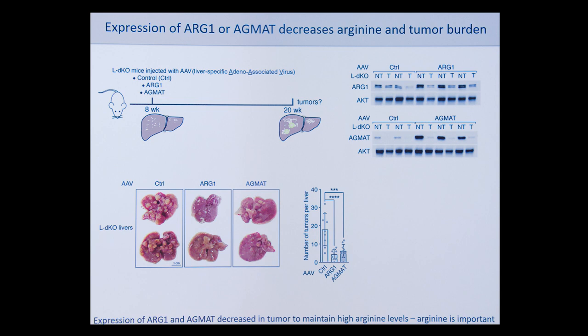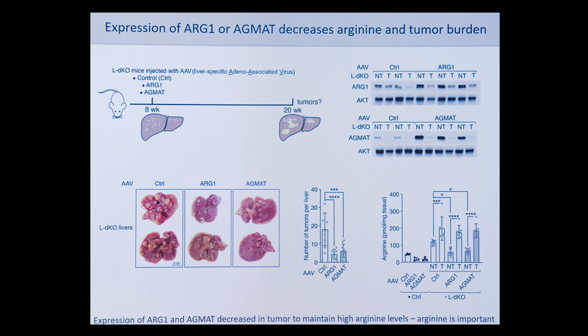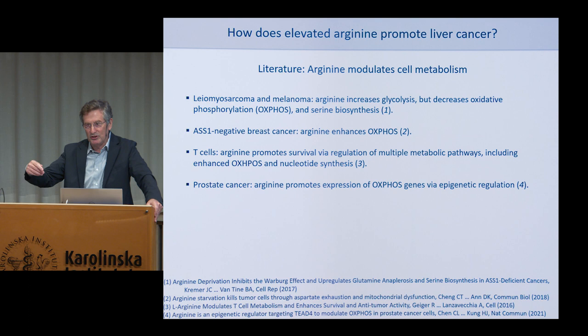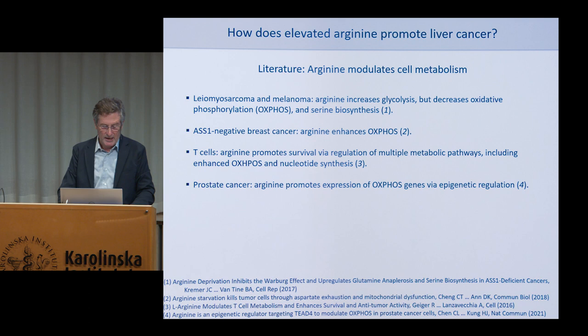So it appears that expression of ARG1 and AgMet is turned off to ensure high levels of arginine, which tells us that it's arginine itself — unmetabolized arginine — which is important for the tumors. The question then is what is this arginine being used for? Looking at the literature, we find emerging evidence that arginine is somehow involved in metabolic reprogramming. Perhaps the most famous example is in T cells, where arginine activates oxidative phosphorylation and nucleotide synthesis.